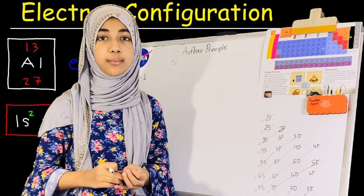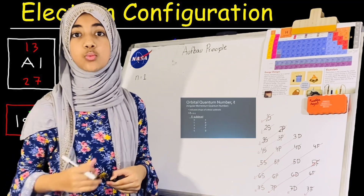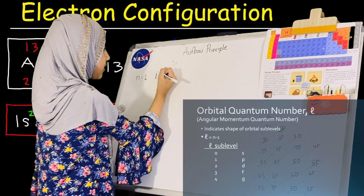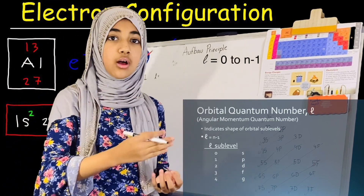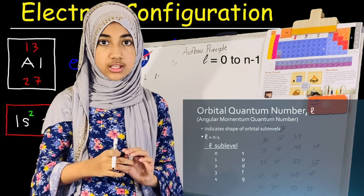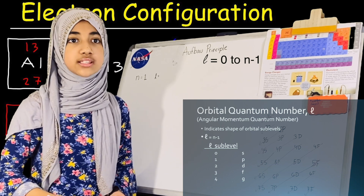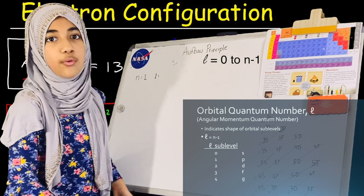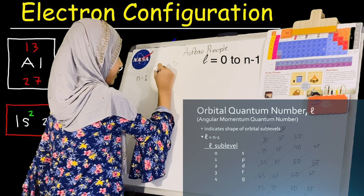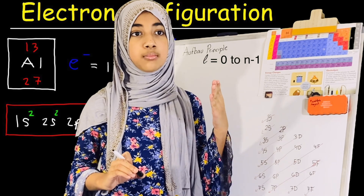The second quantum number is the angular momentum quantum number. We represent this quantum number as a lowercase l. The value of l starts from 0 all the way up to n minus 1, meaning the number right before our n. So when n equals 1, l equals 0, because that's the only non-negative number before 1. So we write l equals 0.